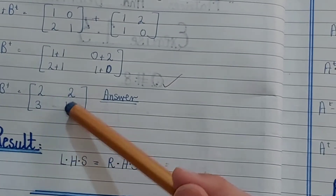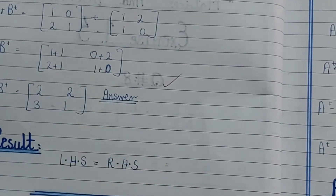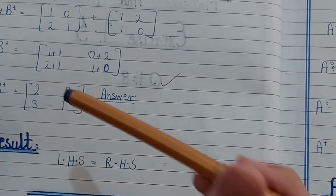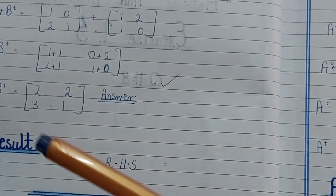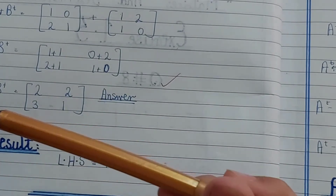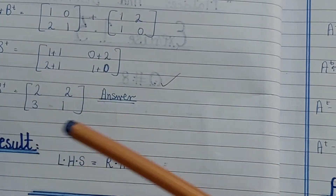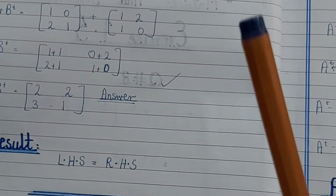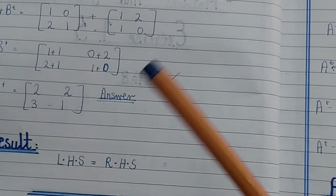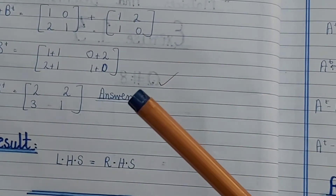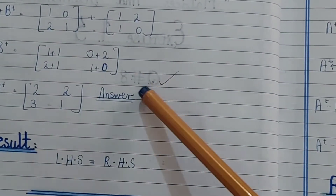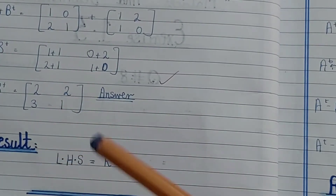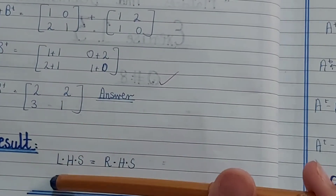The right-hand side answer is [2,2;3,1]. The left-hand side answer was also [2,2;3,1]. Since left-hand side equals right-hand side, part 1 is verified: (A+B)^T = A^T + B^T. Hence LHS = RHS.